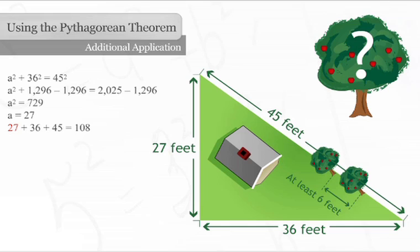Twenty-seven plus thirty-six plus forty-five equals one hundred eight.